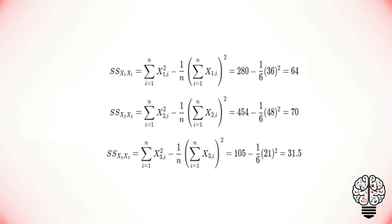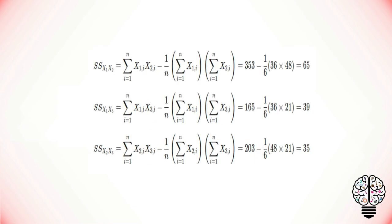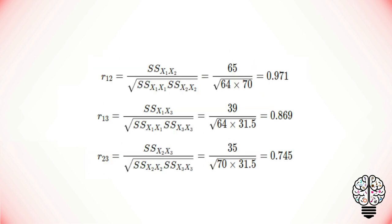Based on the square sums, the Pearson's correlation coefficients are calculated as r12 equal to 0.971, r13 equal to 0.869, and r23 equal to 0.745.